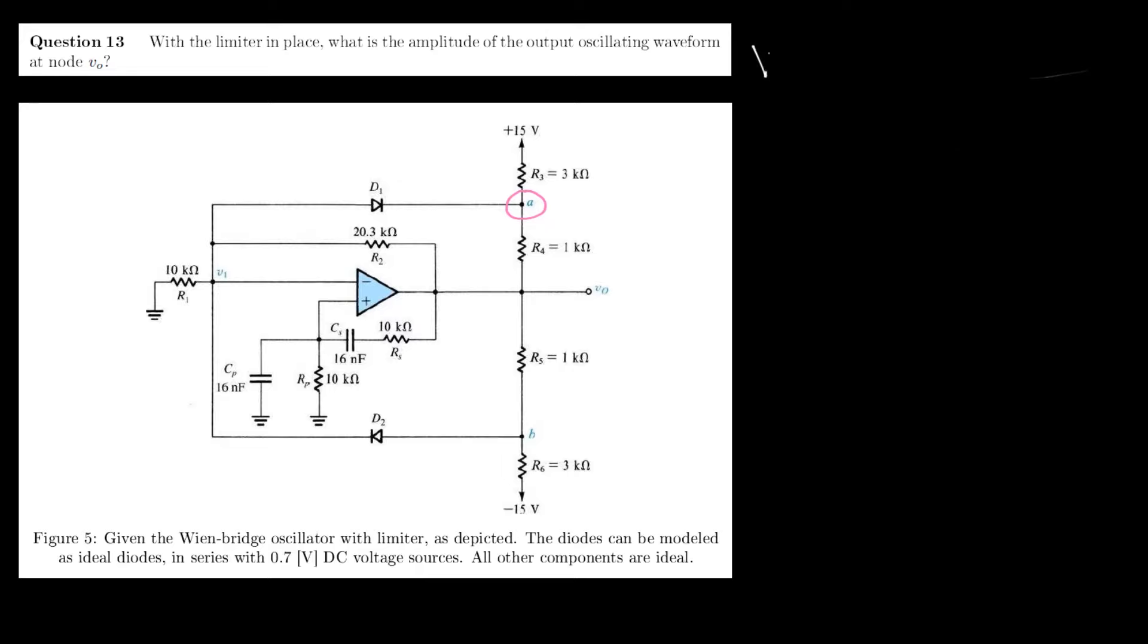So that will be the following: VA minus 15 volts over 3 kilo ohms plus VA minus VO over 1 kilo ohm will be 0.